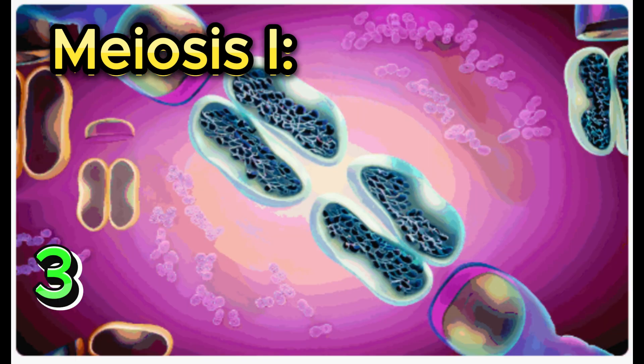Number 3: Metaphase I. Paired homologous chromosomes align at the cell's equatorial plane.